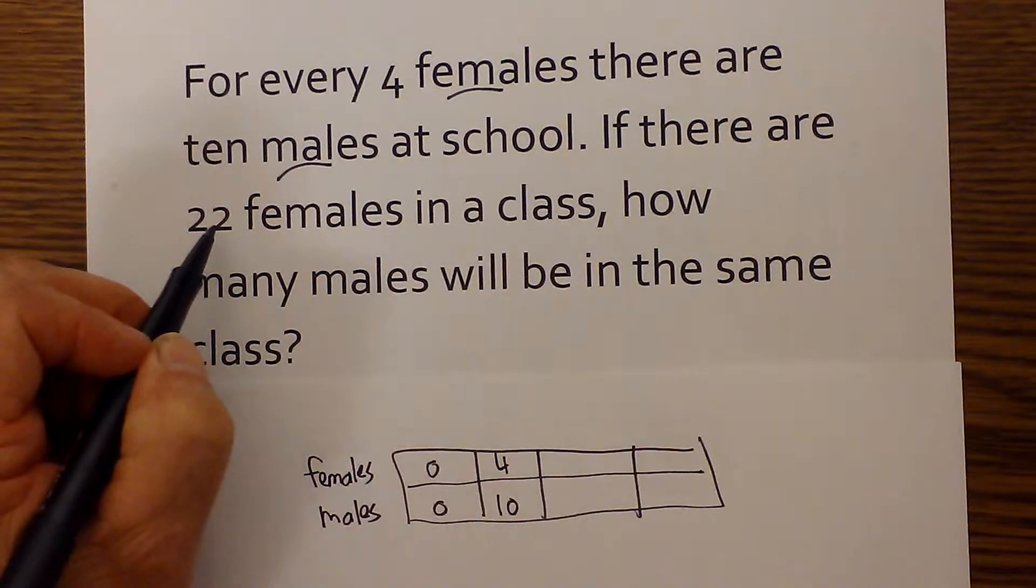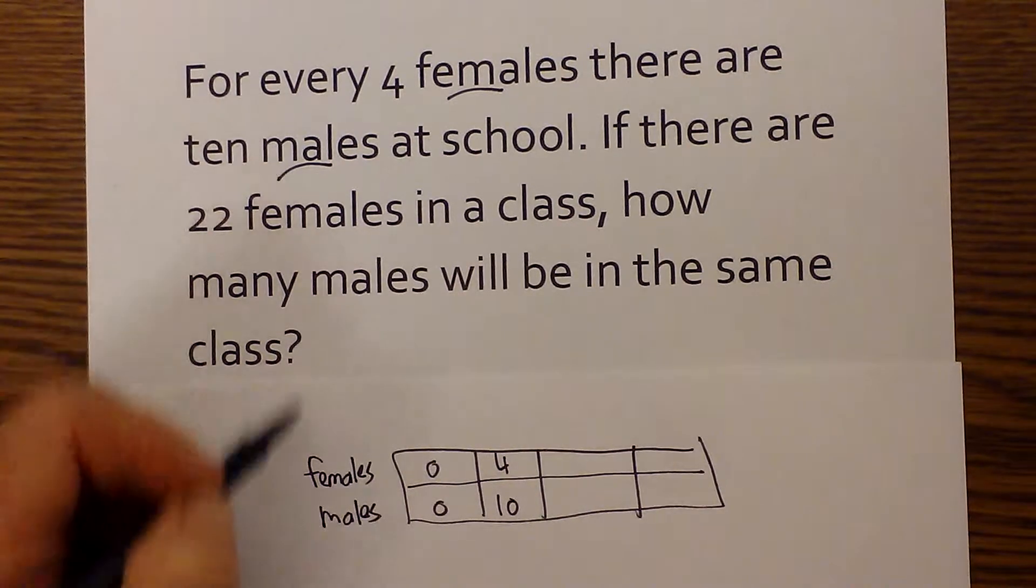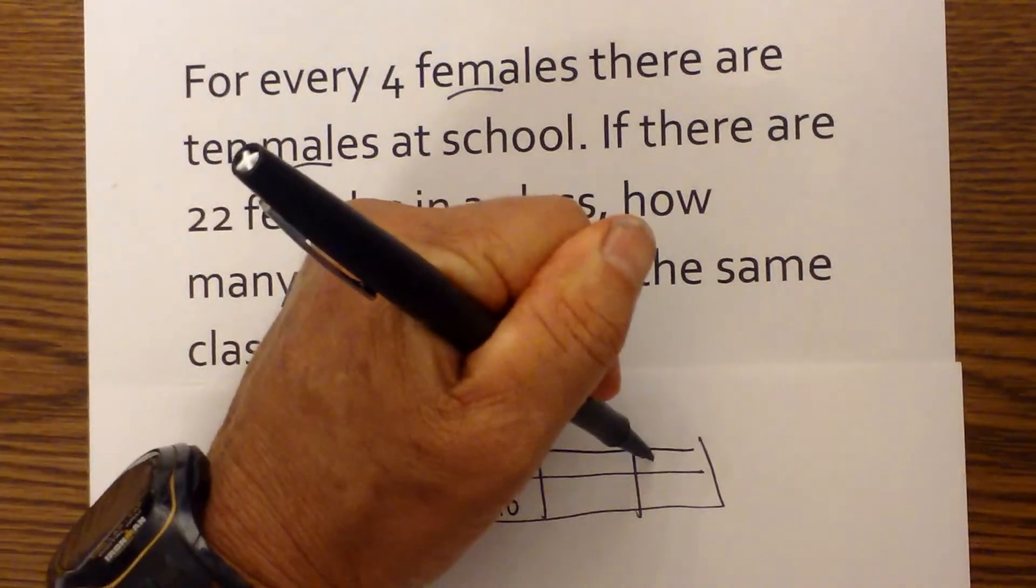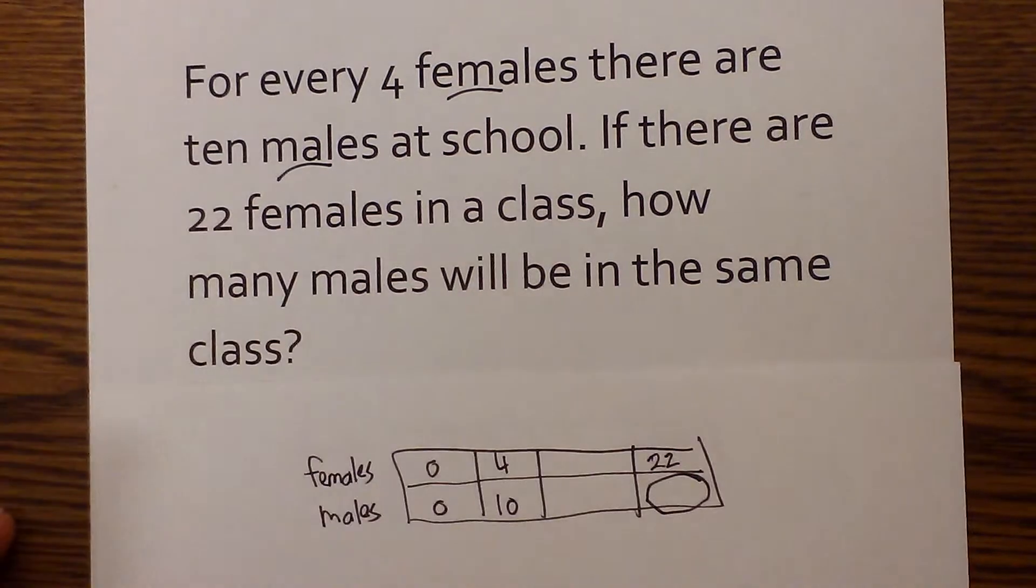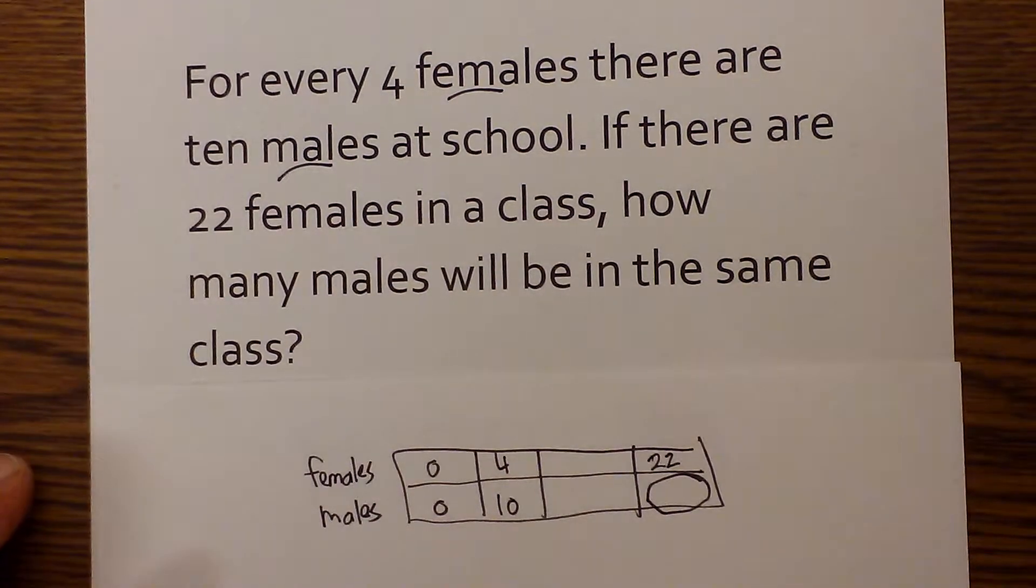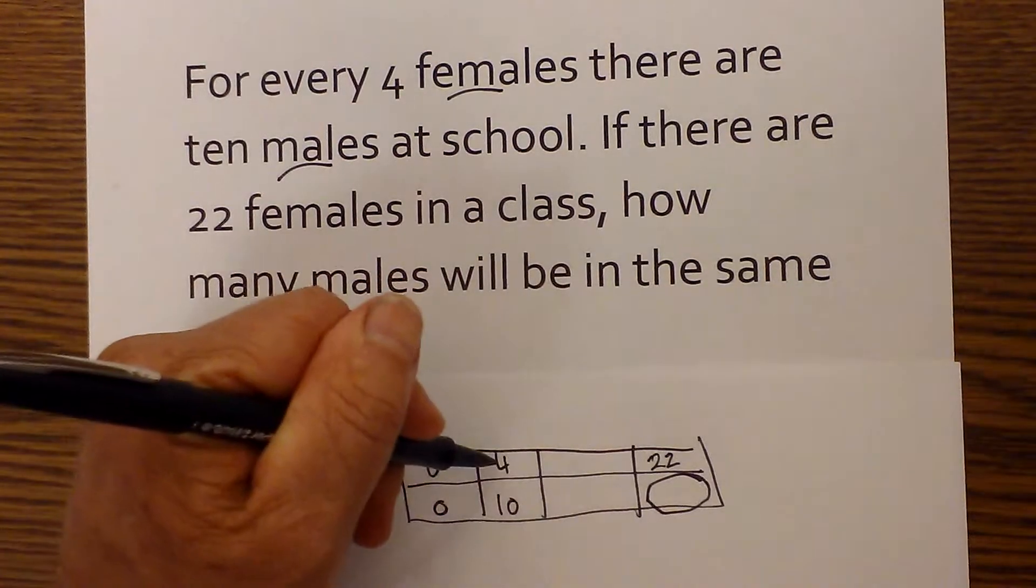And I want to know how many females will be... If there are 22 females in a class, how many males will be in that? So I'm trying to find this value right here. And that will tell me how many males will be in the same class. And then I'm going to simplify.